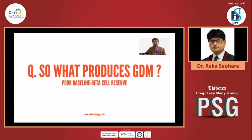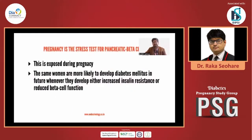So overall, what is the rate-limiting step for development of gestational diabetes? It is the poor baseline beta cell reserve — that is what leads to gestational diabetes. Women with poor baseline beta cell reserve before pregnancy are likely to develop gestational diabetes compared to those with good beta cell reserve who can compensate for increased insulin resistance. Pregnancy is like a stress test for pancreatic beta cells. What this tells us is that beta cell function is exposed during pregnancy, and the same women are likely to develop diabetes mellitus in future, as beta cell function will keep declining. Even if it does not decline, insulin resistance may increase because of weight gain and obesity later in life, also leading to diabetes mellitus. So gestational diabetes exposes the poor reserve of the beta cell, meaning these women are likely to develop diabetes mellitus in future.